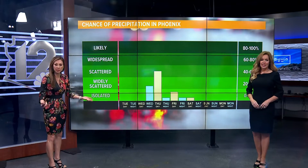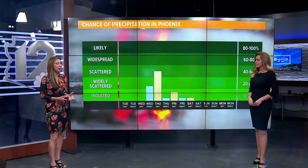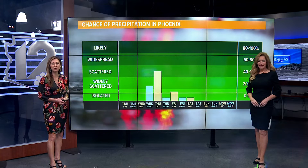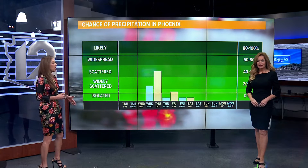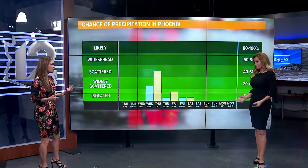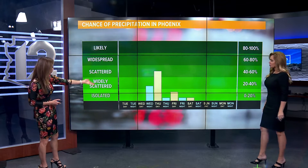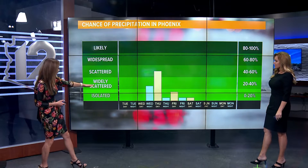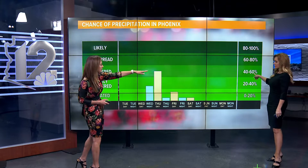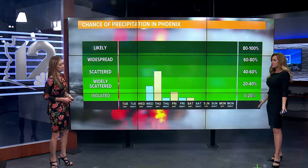As you just mentioned, there's a chance of rain this week for Arizona. Meteorologist Ginger Jeffries joins me now. And Ginger, you always hear about the percentage of rain. For instance, right here, you've got the graph up. Thursday, there's a chance 40 to 60%. But what exactly does that mean?